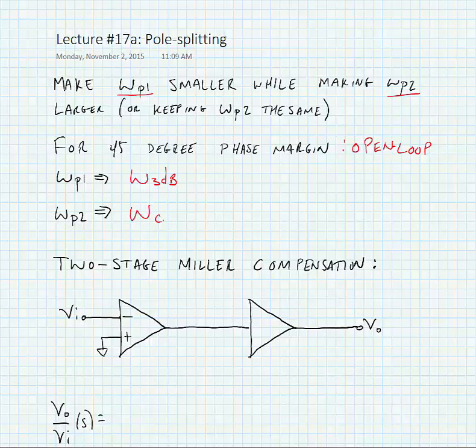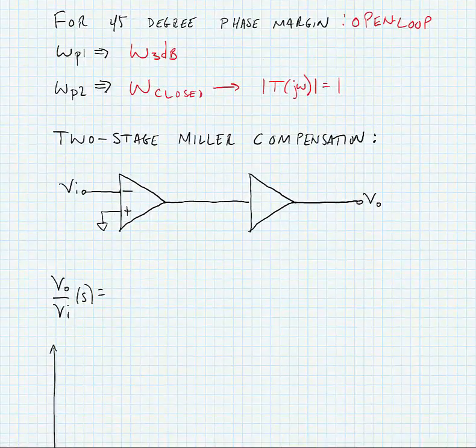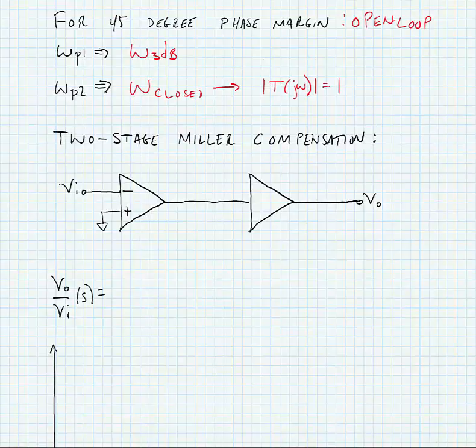This is the frequency where the magnitude of the loop gain that we've been looking at is equal to one. Looking at two-stage Miller compensation, we looked at using narrow banding in the last example and what we're going to do now is look at using Miller compensation.